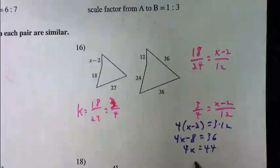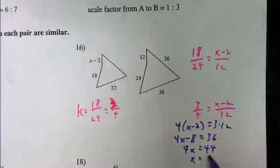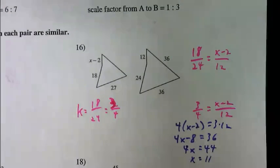Three times 12 is 36. Again, use your properties to solve. Bring the eight over. Add eight. That gives us 44. Divide by four, and you get 11.